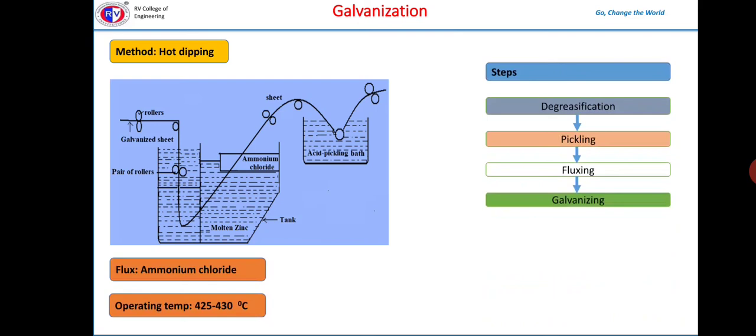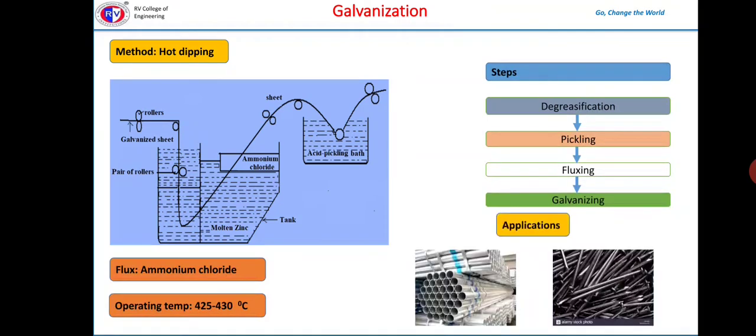Galvanization is used extensively to protect iron from corrosion in the form of roofing sheets, fencing wires, buckets, bolts, nuts, screws, pipes, etc. Galvanized steel reinforcements are used in building constructions where high degree of corrosion resistance is required. One important note here: